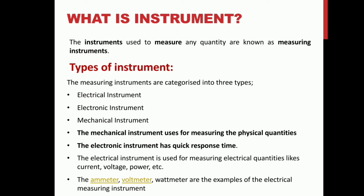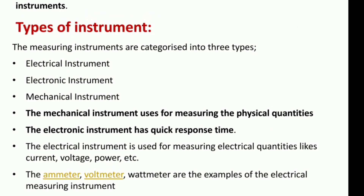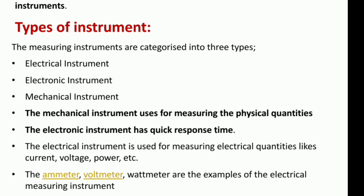What is an instrument? The instruments used to measure any quantity are known as measuring instruments. The measuring instruments are categorized into three types: electrical instruments, electronic instruments, and mechanical instruments. Mechanical instruments are used for measuring physical quantities. Electronic instruments have quick response time.